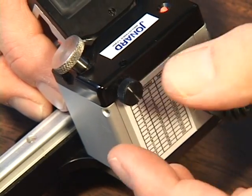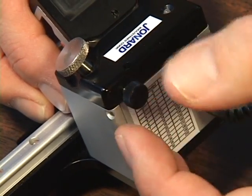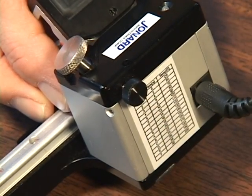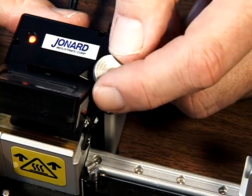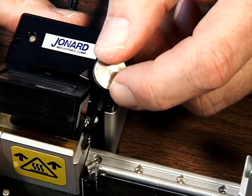To accommodate your fiber, loosen the locking thumb screw to release the blade adjustment screw. Next, open the blades by turning the adjustment screw clockwise all the way.